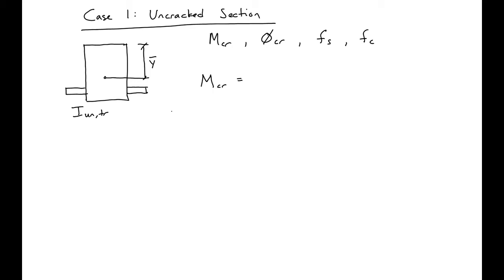So in this case we'll say our M cracking equals the tensile capacity of our concrete times our uncracked transformed section property, or moment of inertia, over the distance to the bottom fiber.